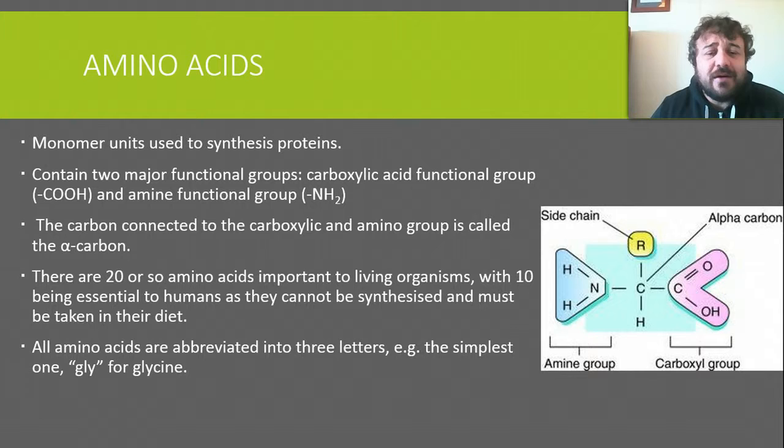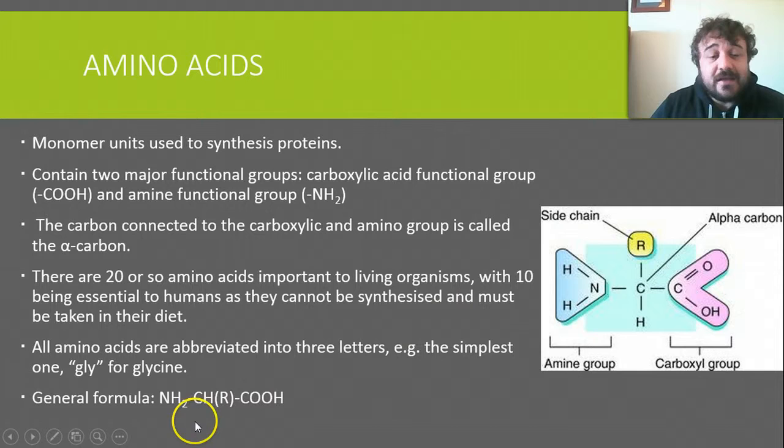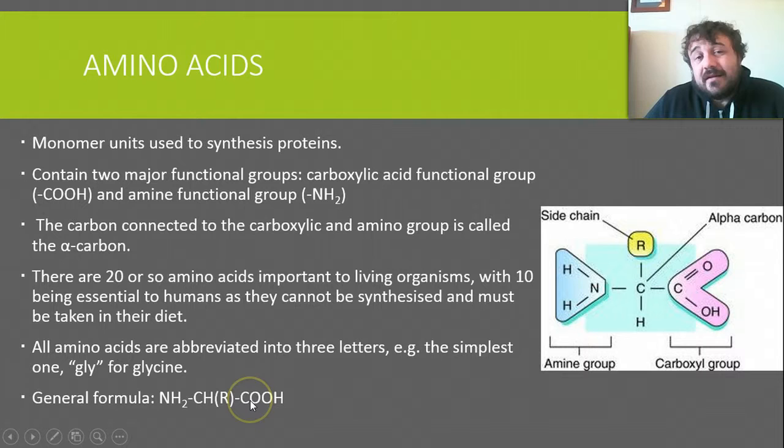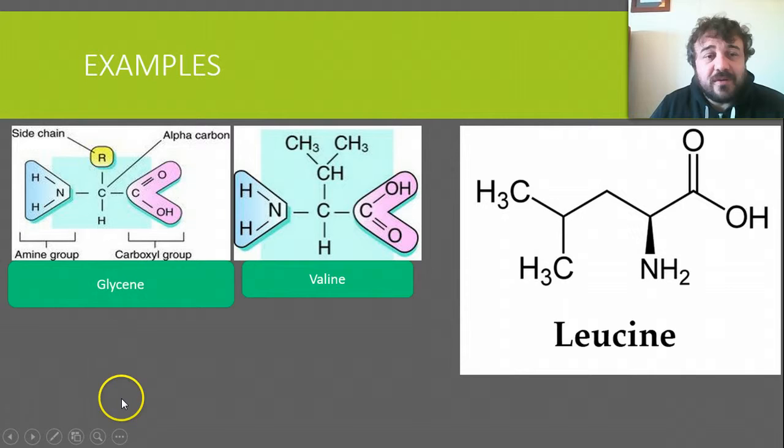All amino acids can be abbreviated in three letters, and glycine is the simplest. In glycine, R is just replaced with an H. The general formula is NH2-CH(R)-COOH, where R is where you put your side chain, and COOH is the carboxylic acid.